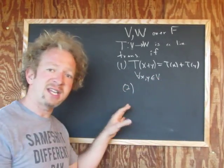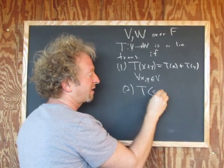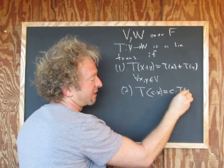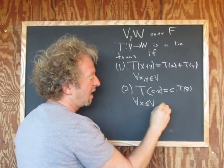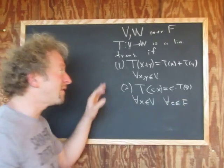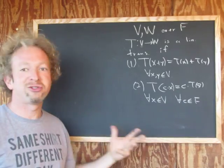Two, if you take T of a scalar C times our vector X, that's equal to C times T of the vector X. And this has to hold true for all vectors X in our vector space V, and for all scalar C in our field F. So if both of these conditions hold, then we've shown that our function T is a linear transformation.